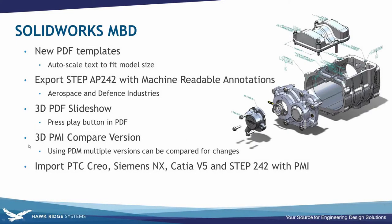The 3D PMI Compare version — if you're currently using PDM, you can compare multiple versions of the same file side by side. If some dimension changed or an annotation was removed, it will compare and show you what was adjusted, what's missing, or what has changed. There's also now import of PTC Creo, Siemens, CATIA, and STEP AP242 files with PMI data, so we can import those files and create 3D PDFs off of them as well.